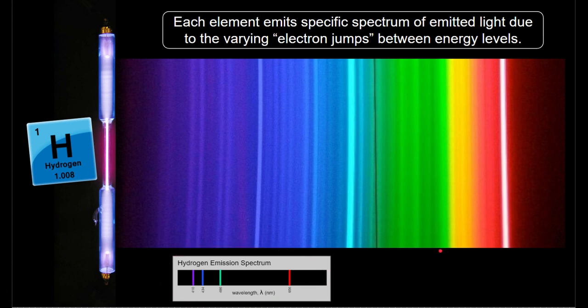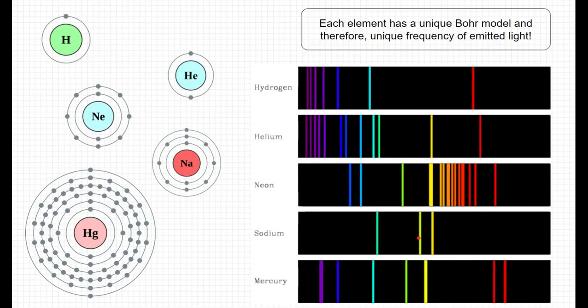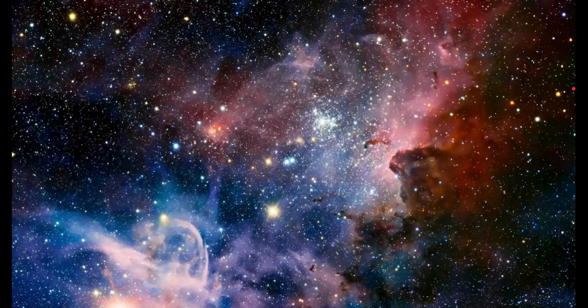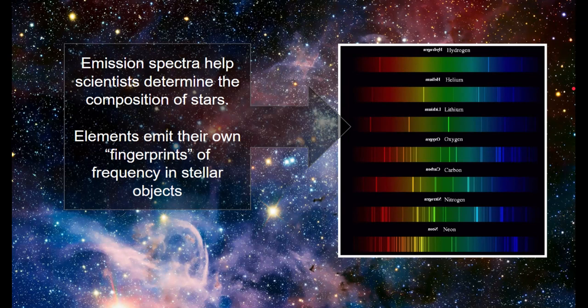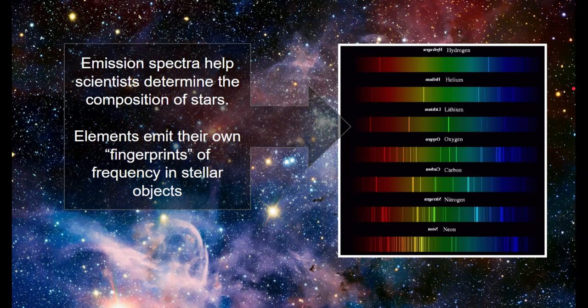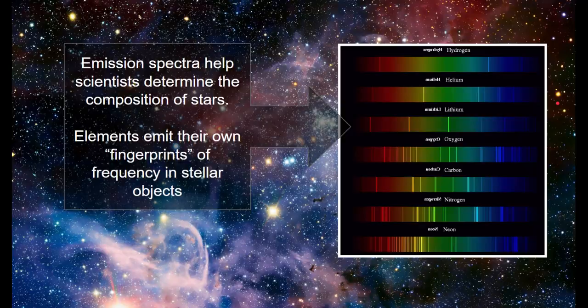Each element emits specific spectrums of emitted light due to those electron jumps between energy levels. In fact, each element, being its own unique Bohr model, can emit its own unique frequencies of emitted light. And this is really important for scientists, especially astronomers. Astronomers can look out into space, and if they see the light emitted by stellar objects, they can tell what those objects are made out of, what elements make up them. Because each element emits their own fingerprint of frequency, and they can compare that to the fingerprints of known light here.